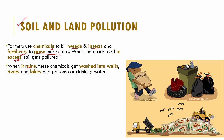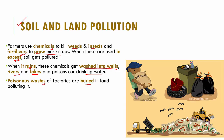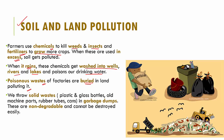And when it rains, these chemicals get washed into wells, rivers and lakes, and this poisons the water that we drink. Poisonous wastes from factories are also buried in land, which leads to pollution of our land. We even throw solid wastes like plastic and glass bottles, old machine parts, rubber tubes, cans, etc. into garbage dumps.